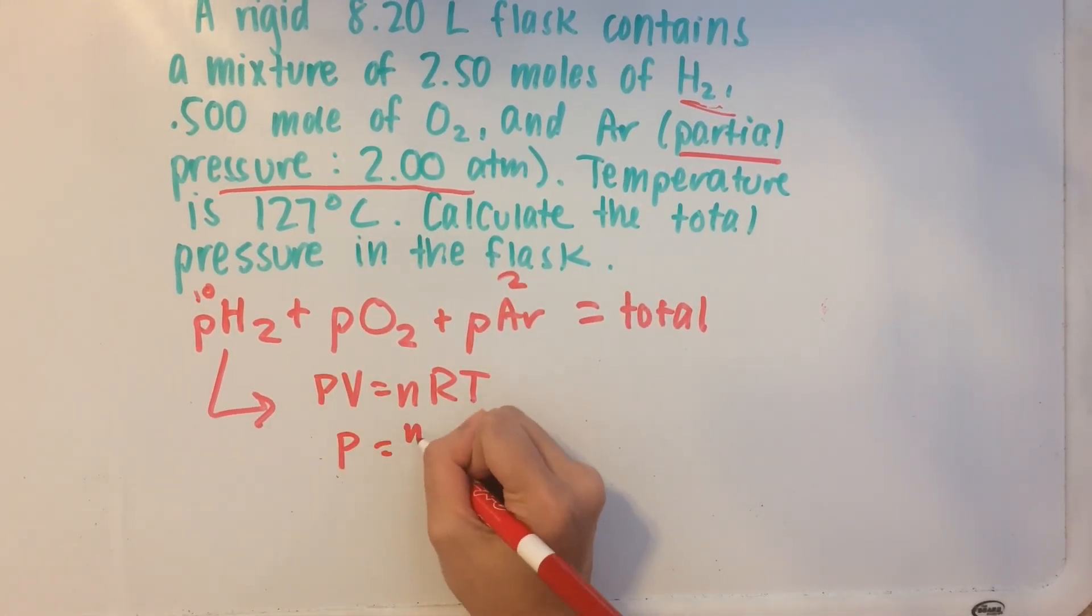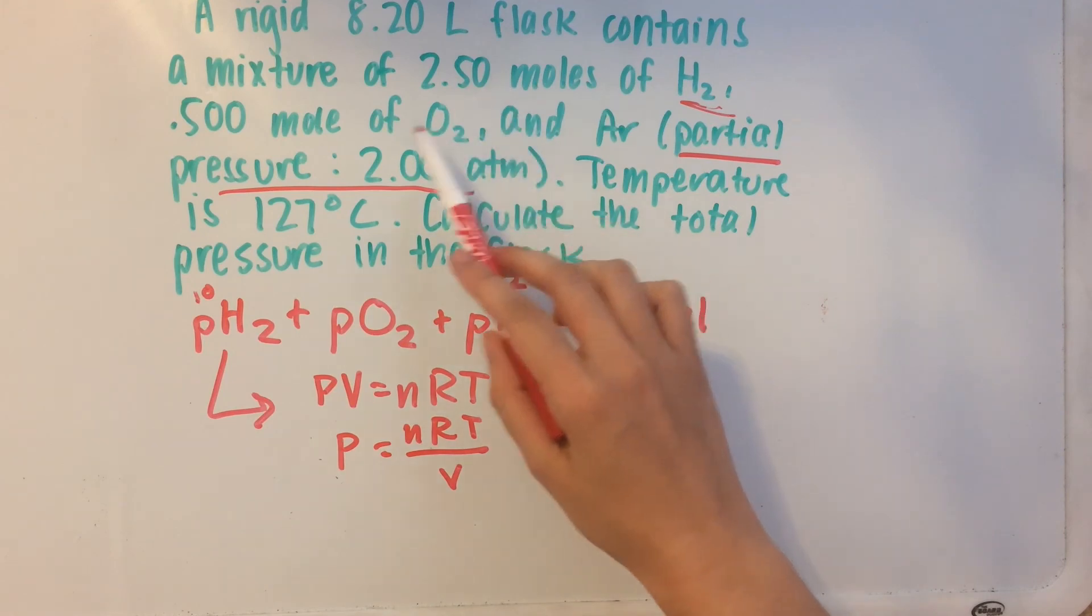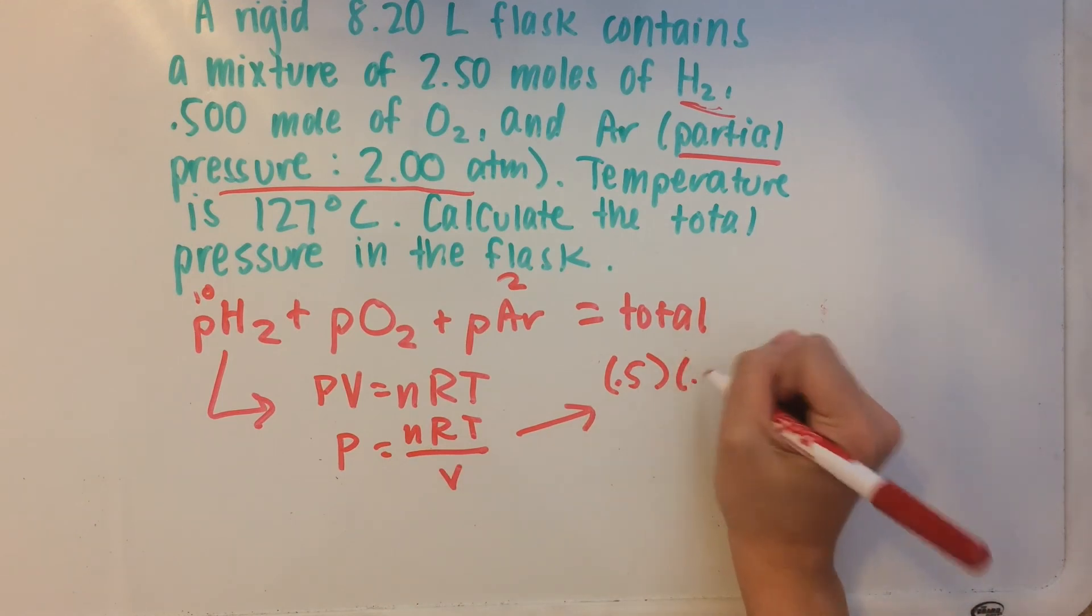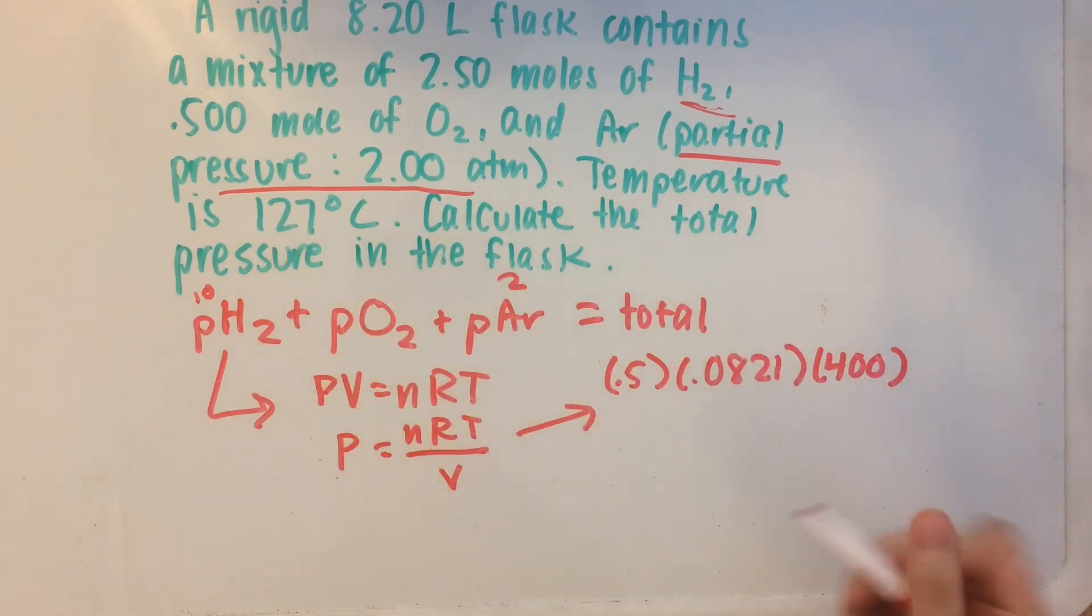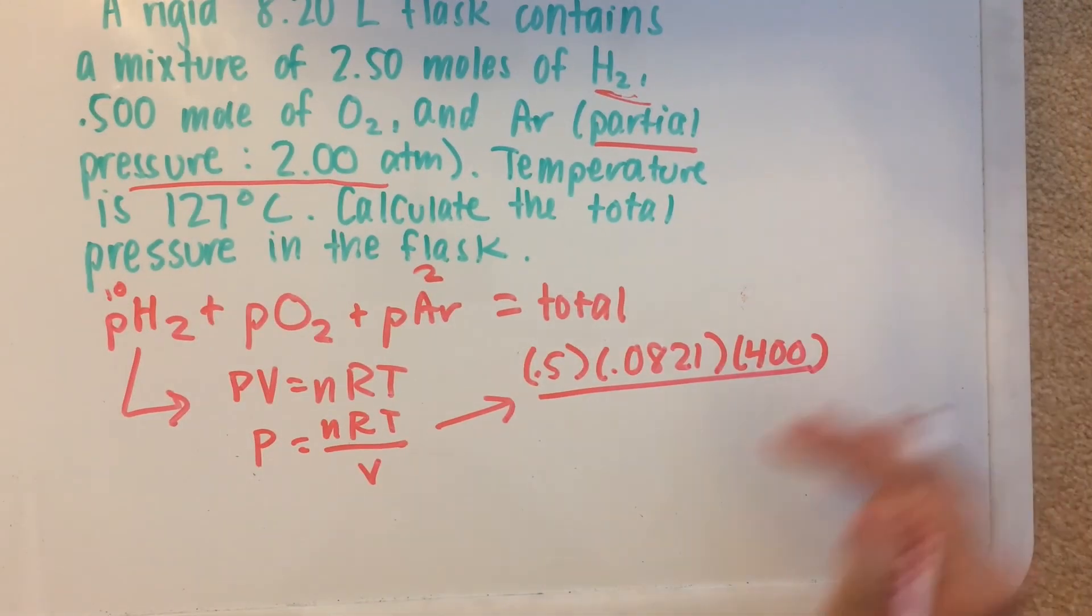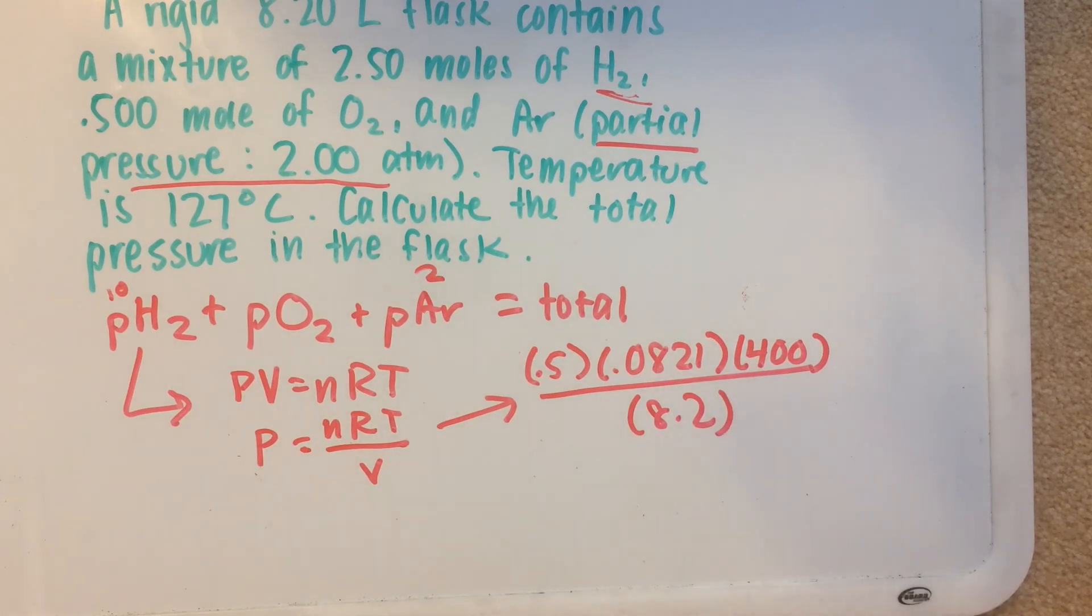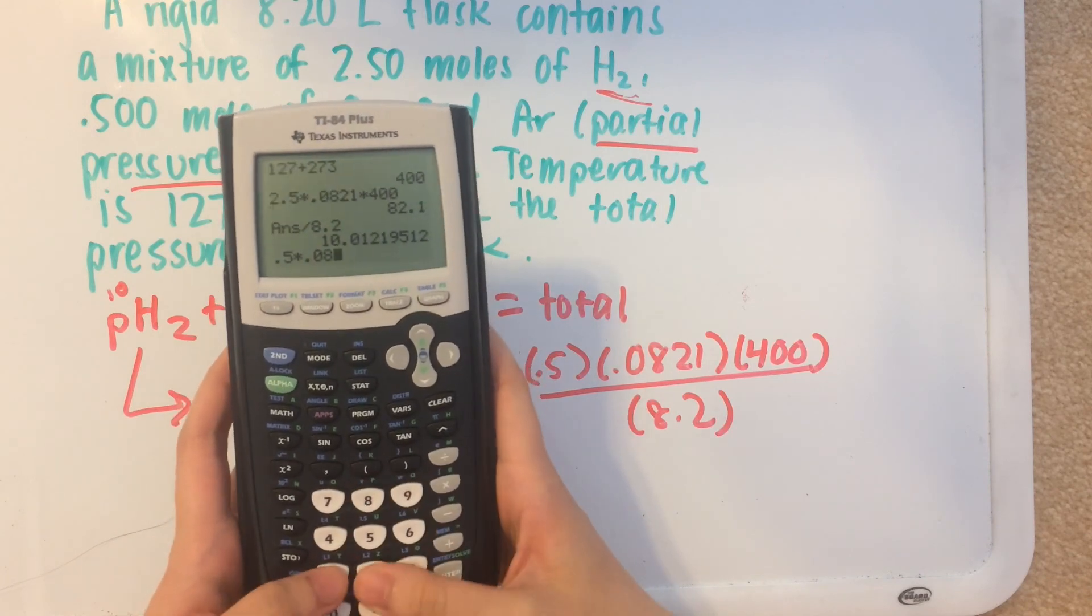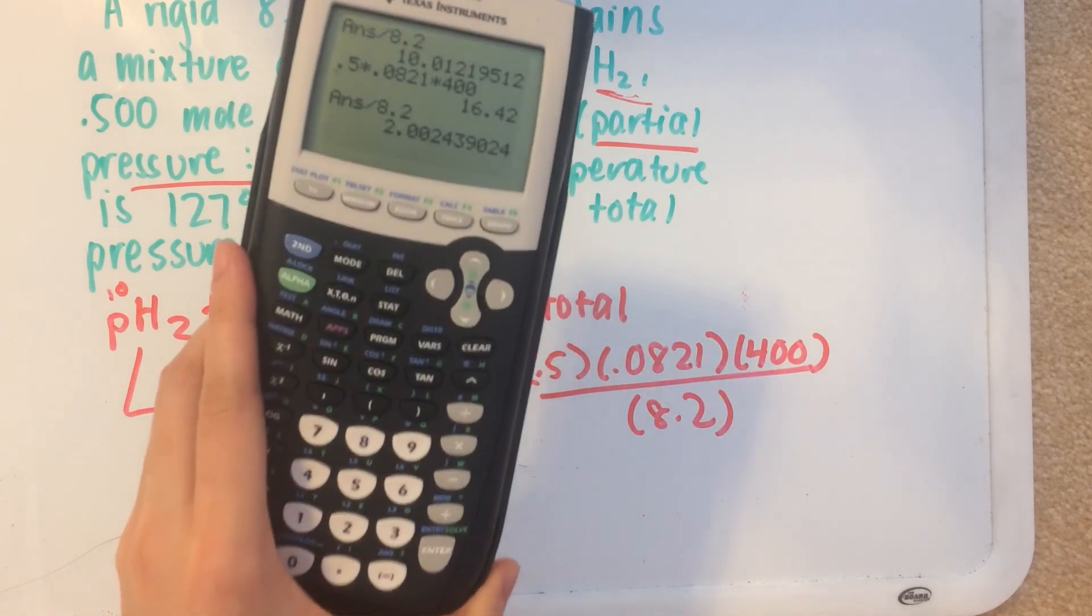P equals nRT over V. That's going to give us 0.5 moles for n. R is 0.0821. Temperature is 400 as well because 127 plus 273 is 400. And then volume is still 8.2 liters. So now we have 0.5 times 0.0821 times 400 divided by 8.2 is basically 2.